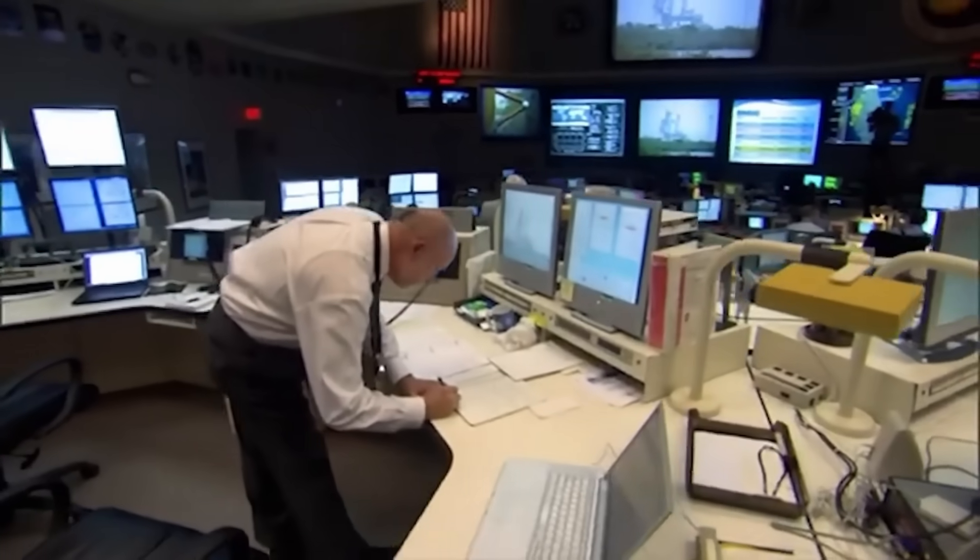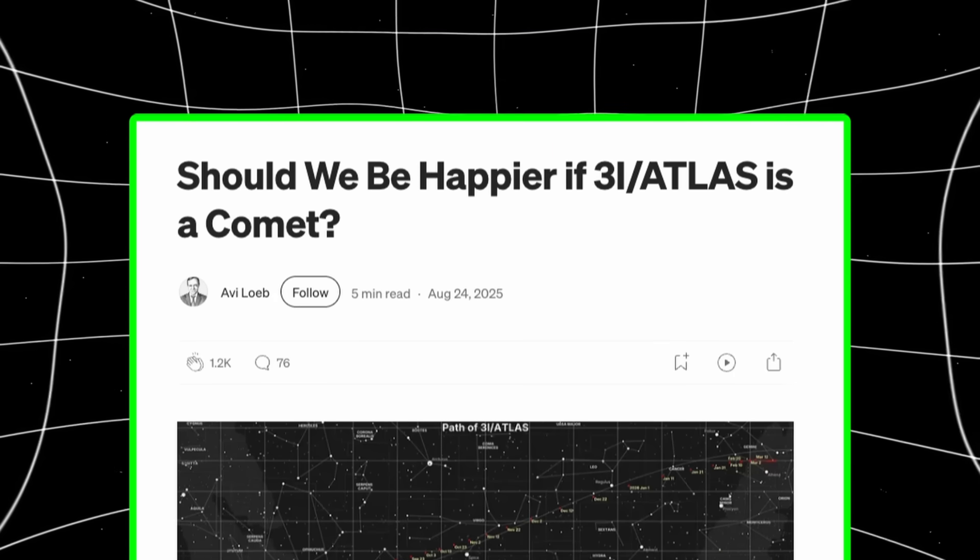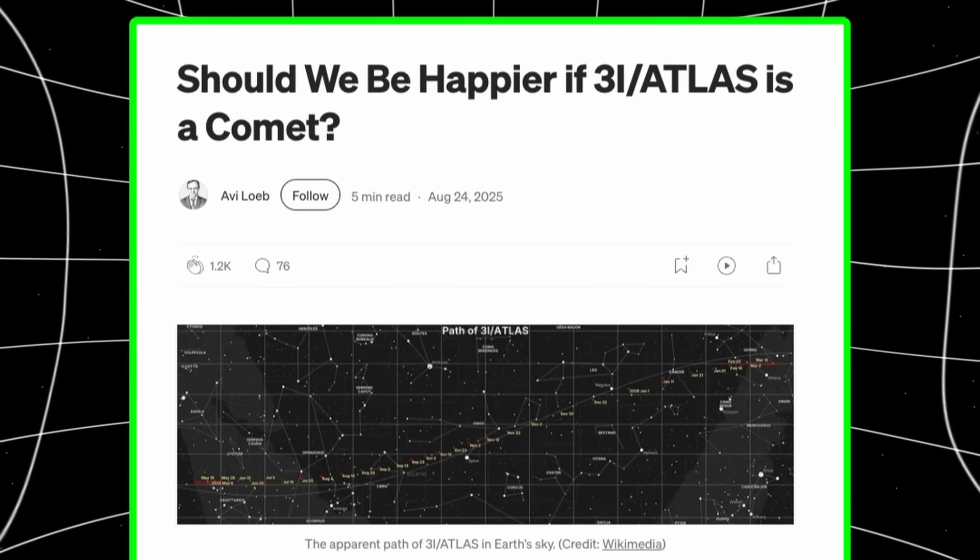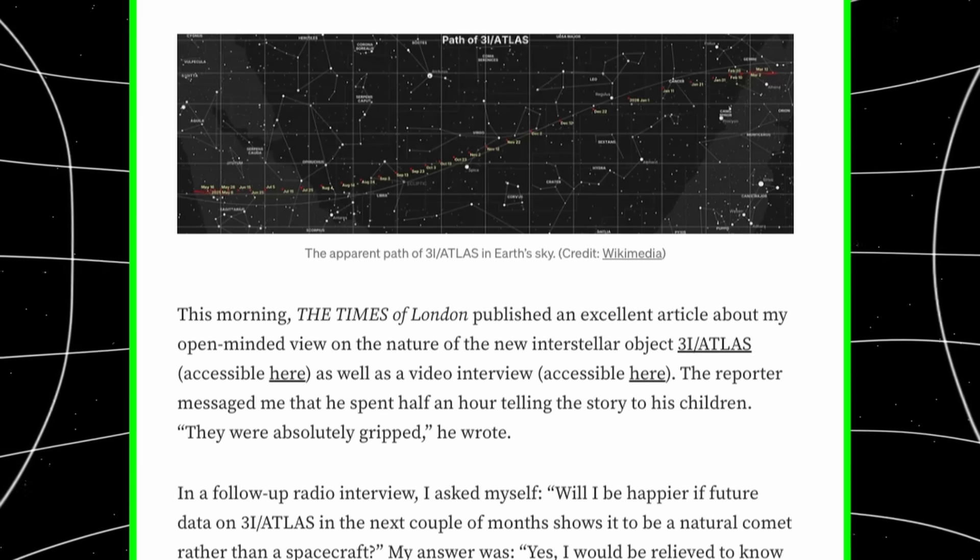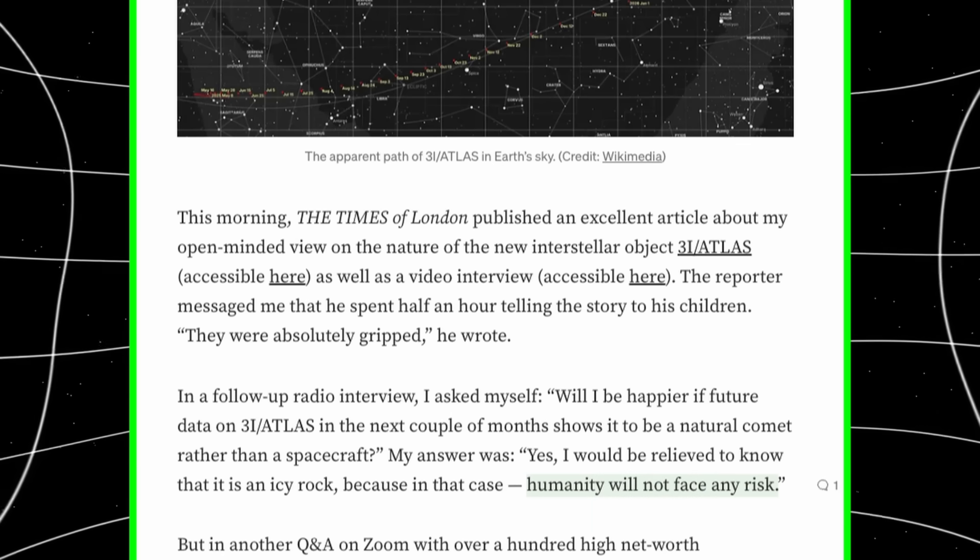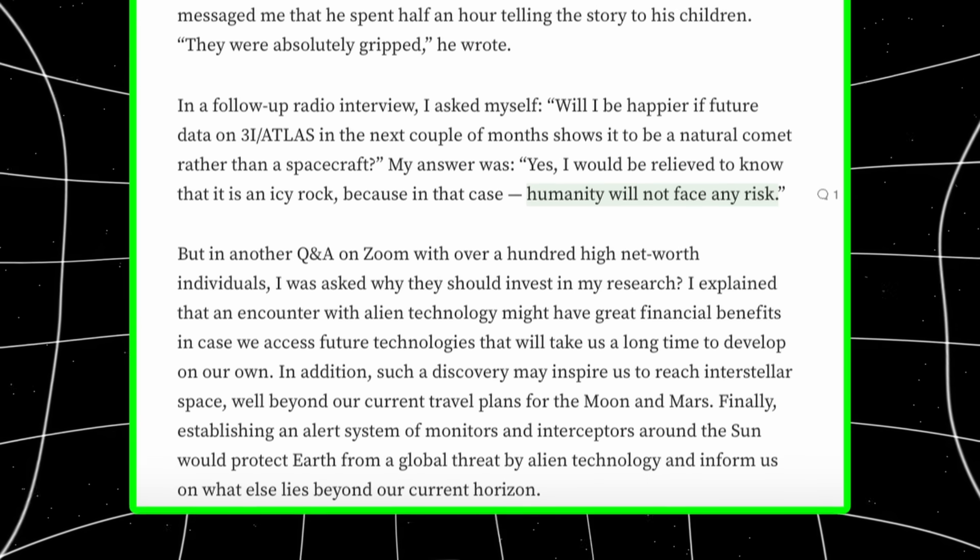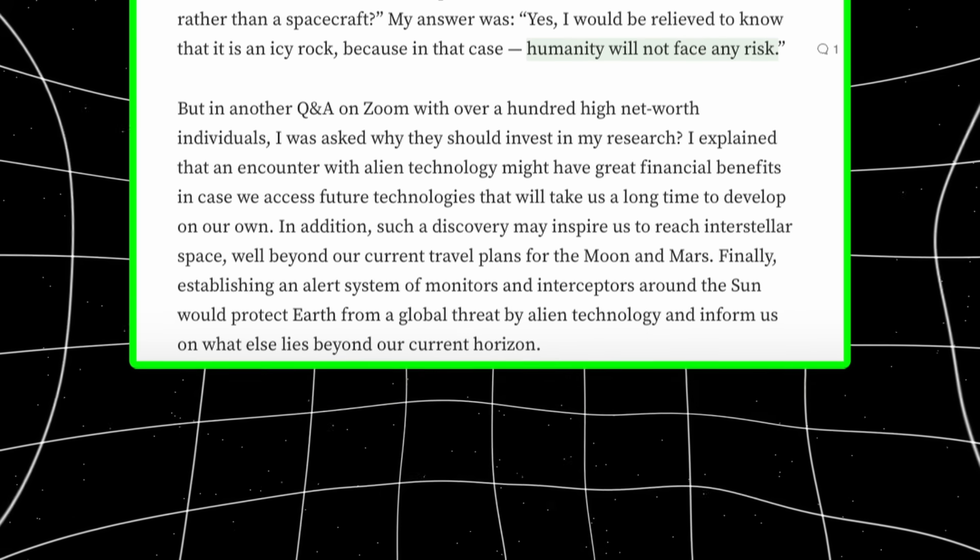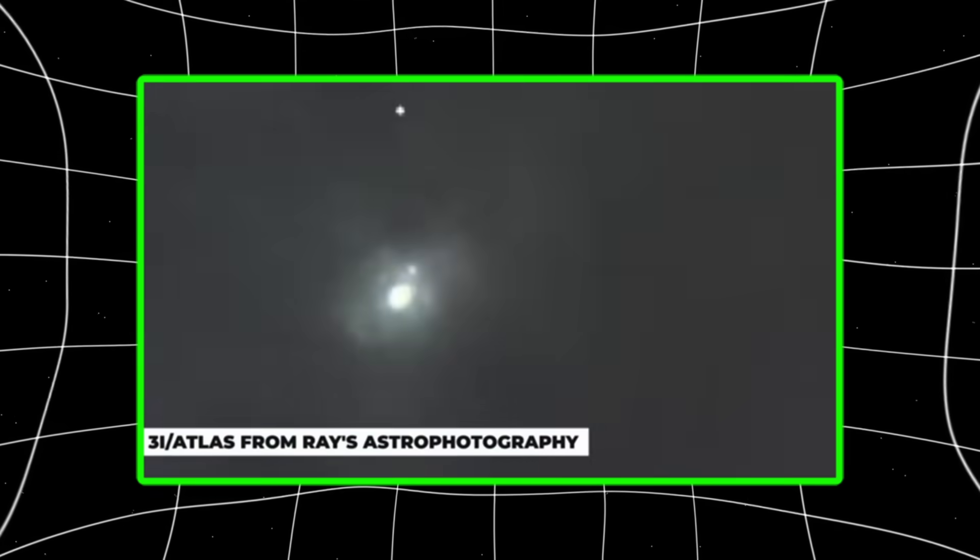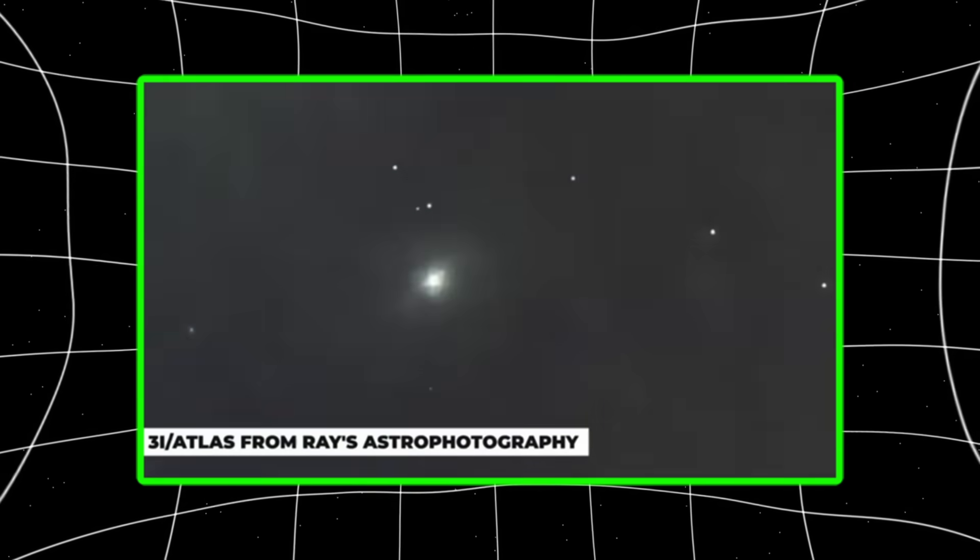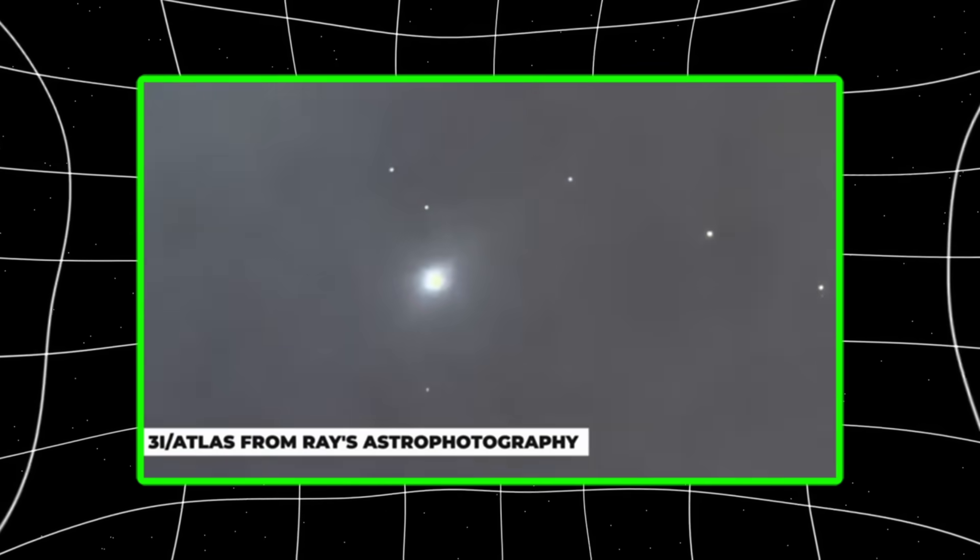Understanding how extreme this precision is requires looking at how interstellar objects normally behave. They enter the solar system with unpredictable rotations and uneven surfaces that react differently to sunlight. Small changes in heating push them in many directions. Their final paths are difficult to predict. Even with advanced models, astronomers expect wide ranges of possible outcomes. Error margins in the millions of miles. Atlas has broken that expectation. Every new observation shows a slimmer margin of error instead of a wider one. The growing accuracy suggests the object is following a clean, stable line that doesn't match the noisy patterns of natural comet motion.